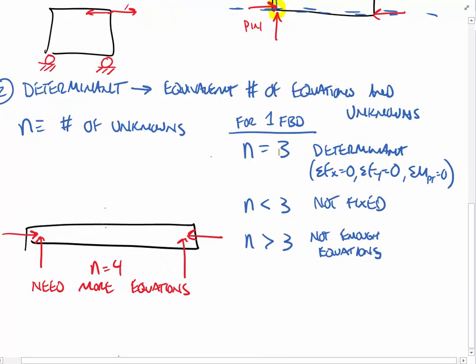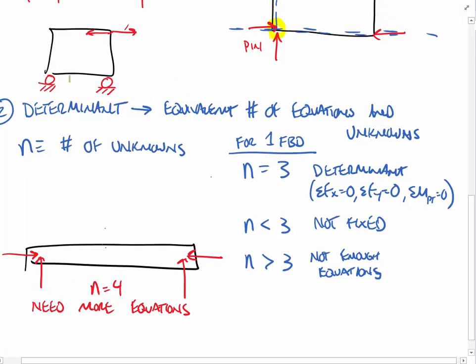If N equals three, that's great — three unknowns, three equations. If we have less than three, the body is not fixed. With two support forces, the lines of action can either intersect or be parallel: if they intersect, it's not fixed for rotation; if parallel, it's not fixed for translation. So less than three means not fixed. If N is greater than three, we don't have enough equations — it's not that the body isn't fixed, it just means that in statics we run out of equations to solve for the number of unknowns.